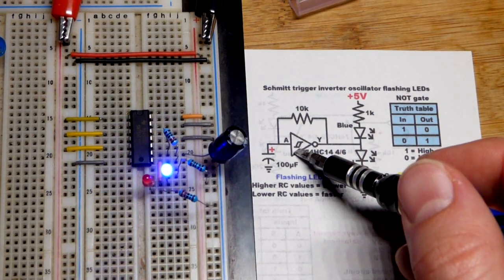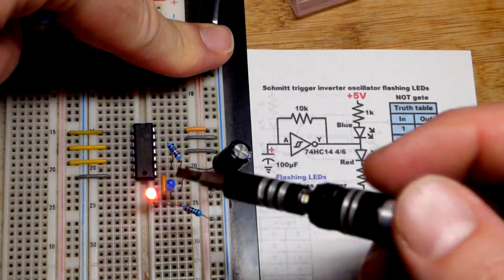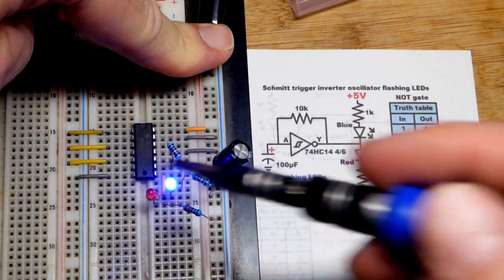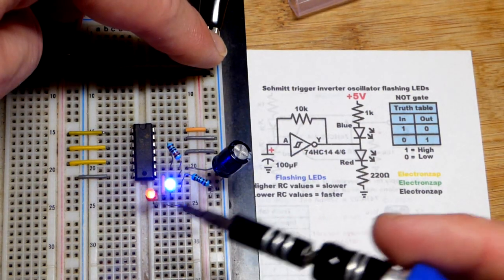So now in this video, we're using a single NOT gate here, and we wired it as an astable multivibrator. These integrated circuits are really easy to shock and damage, so I'm going to make sure I discharge myself before I touch anything.